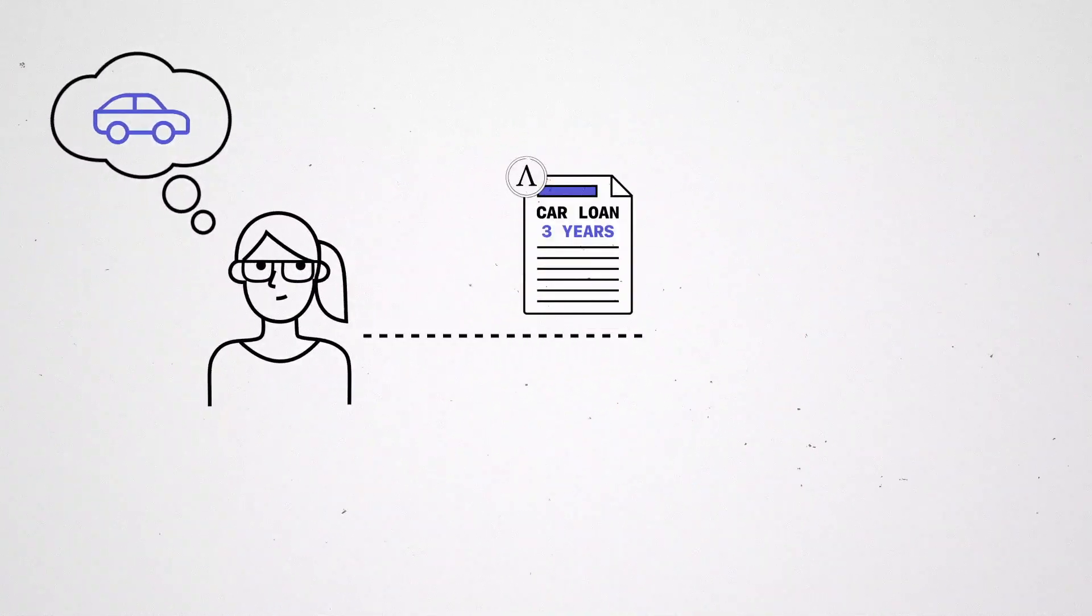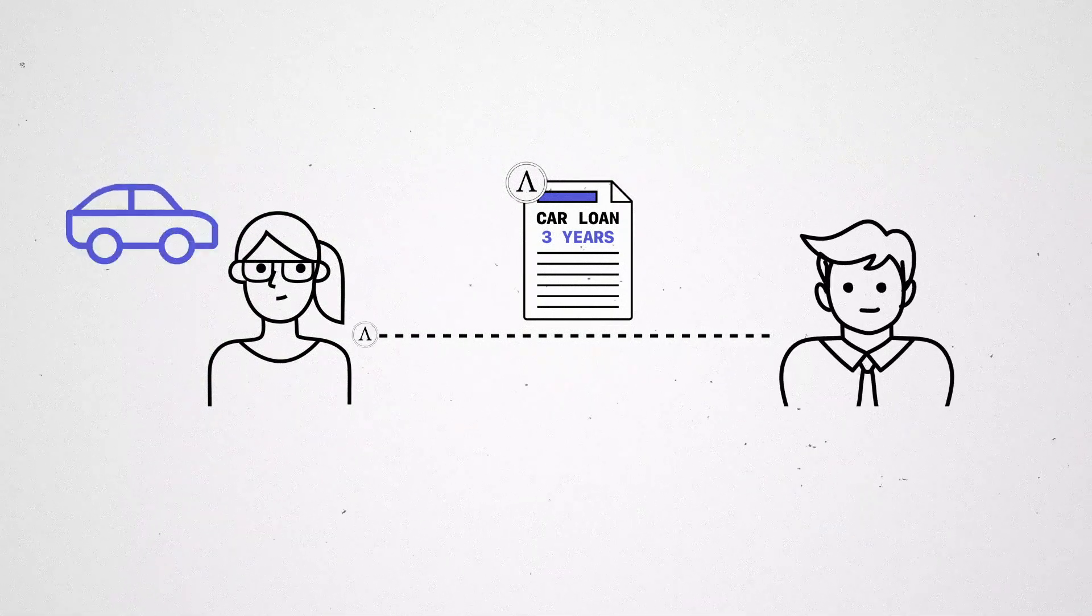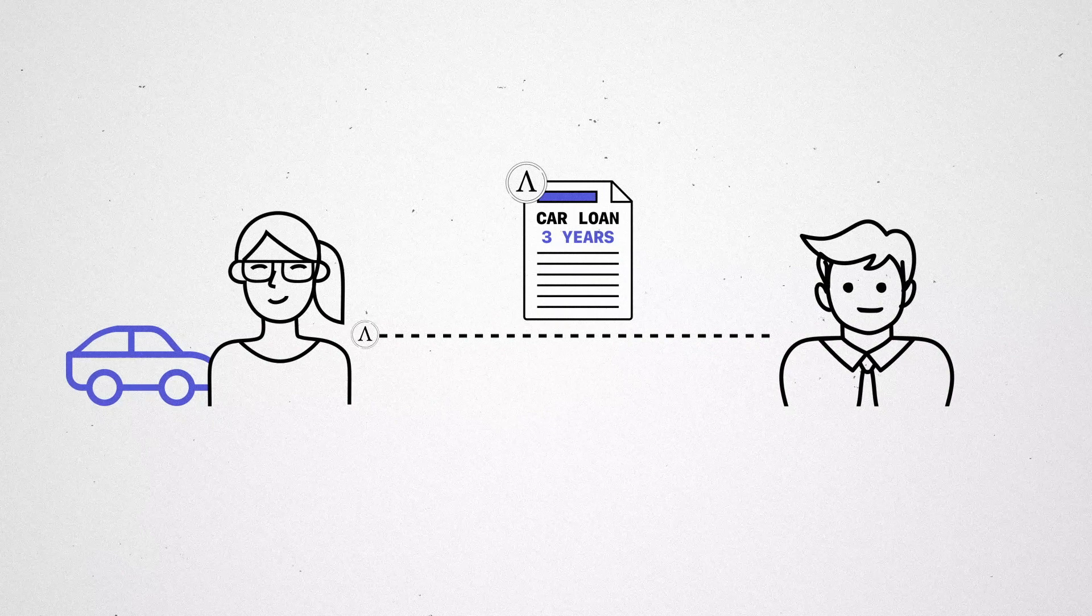If Alice's car loan was denominated in Ample instead of Bitcoin, both Alice and her lender could count on the value of each auto payment remaining relatively stable year after year.